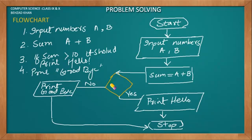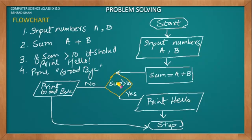The condition is: if sum is greater than 10. This is a simple method for a flowchart to write your program. There are many practical examples. I hope you understand. We have basic symbols: diamonds, processing, input and output, terminals, and arrows. We will finish our lecture here.